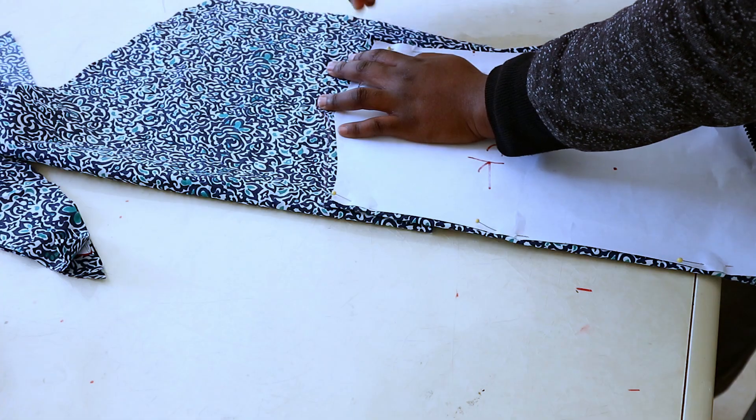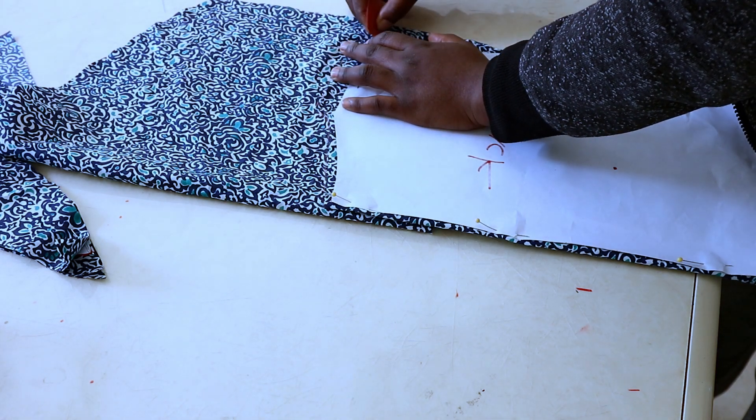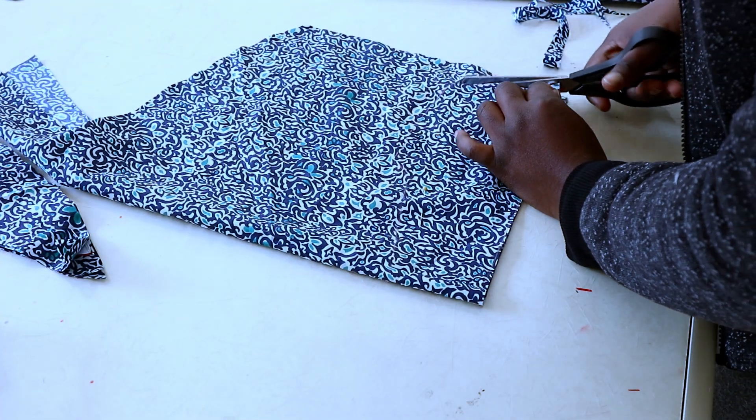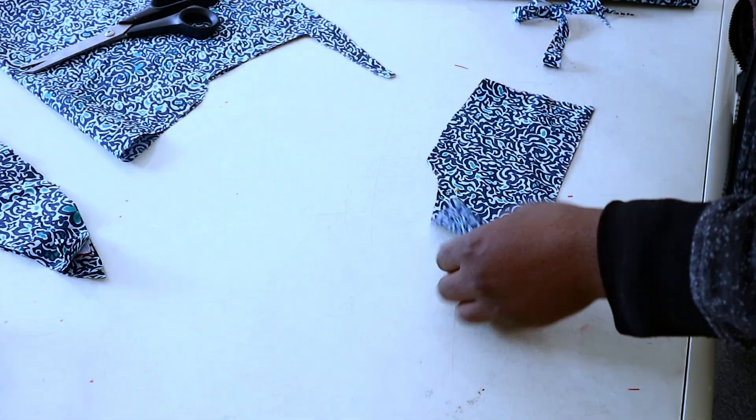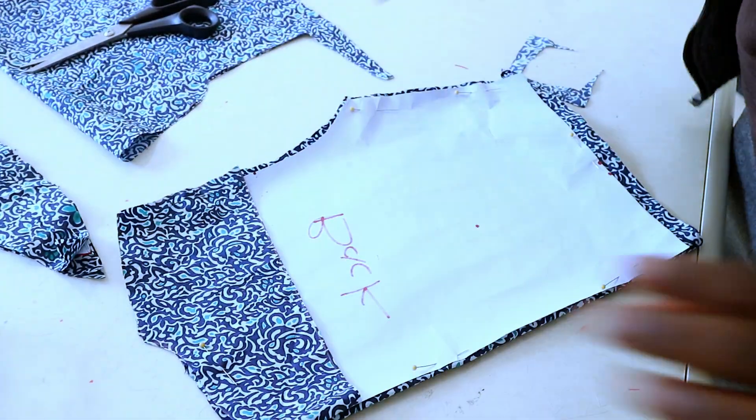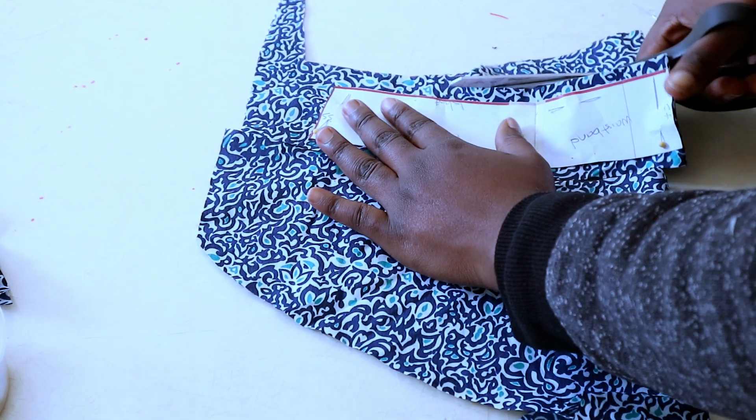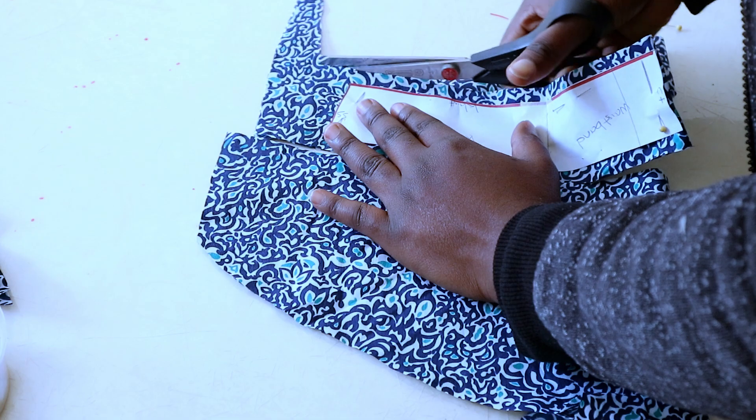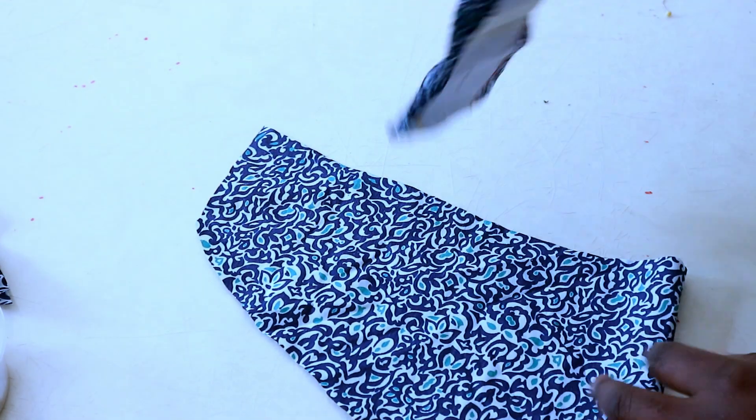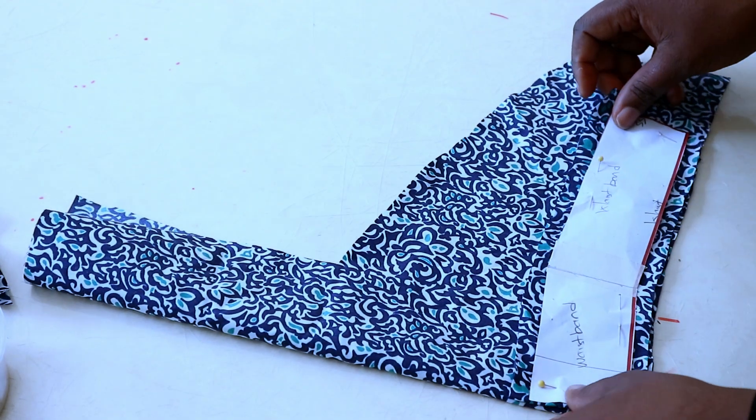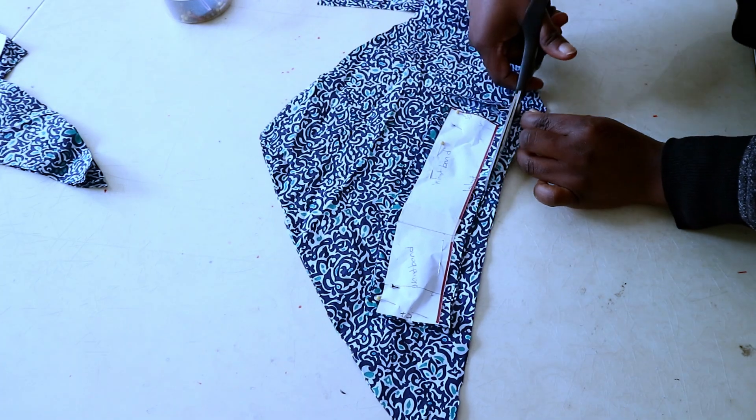I cut the back facing by placing the back pattern on the fabric, tracing around it, and then I cut it. When you're cutting the waistband, cut the back waistband on the fold and add half an inch on the seam for joining the waistband to the peplum and the bodice. Also cut the front waistband, leaving 1 inch on the center front.